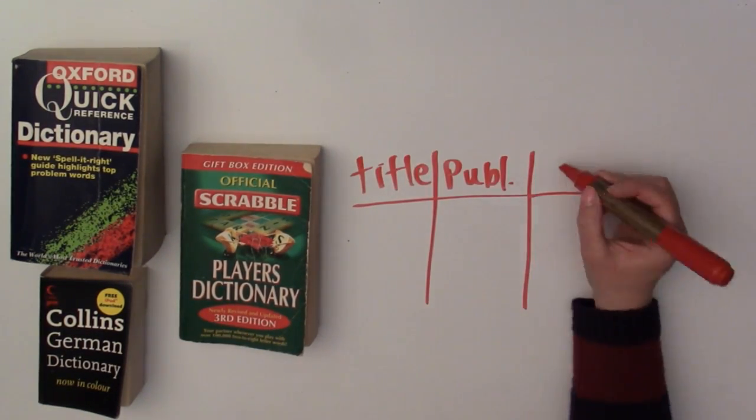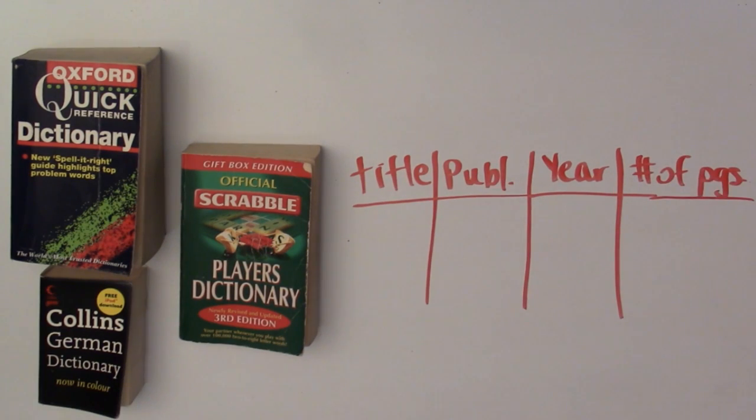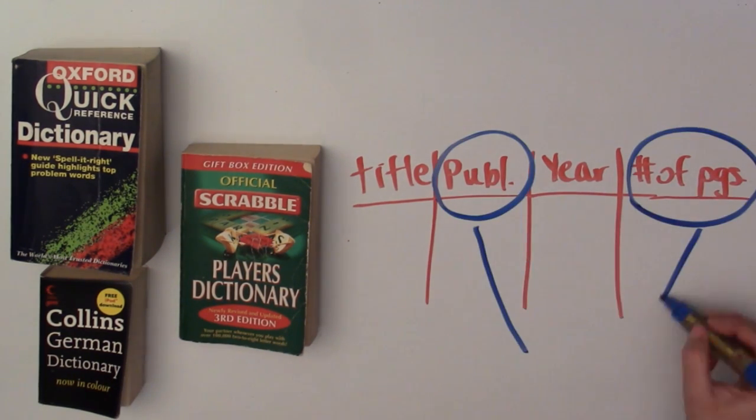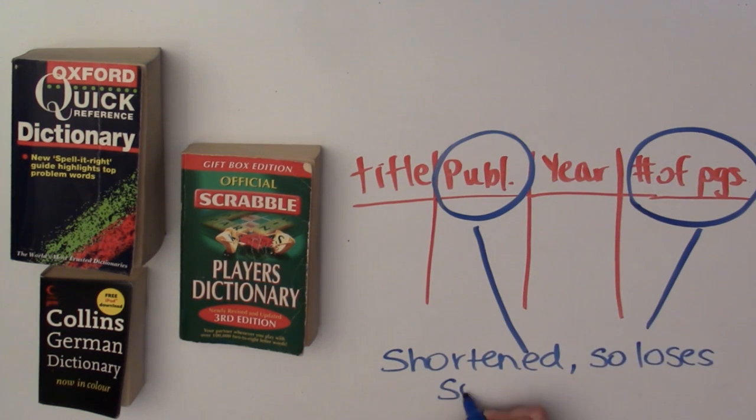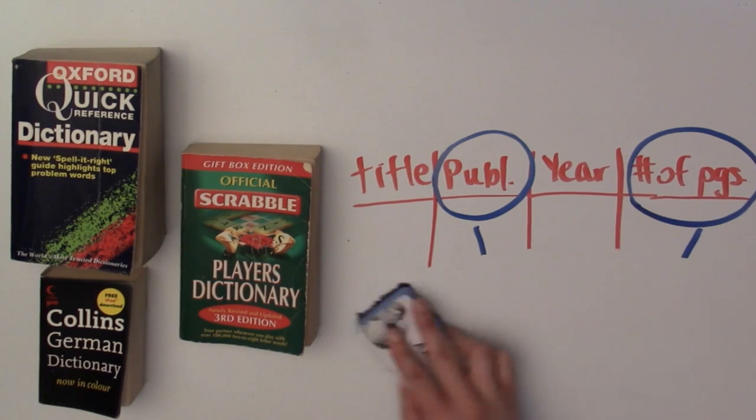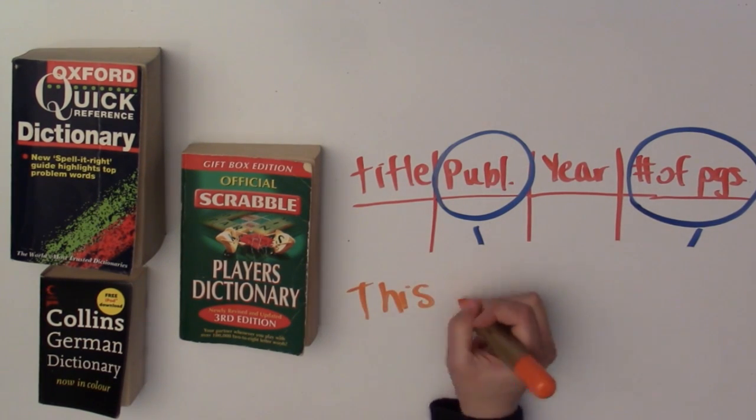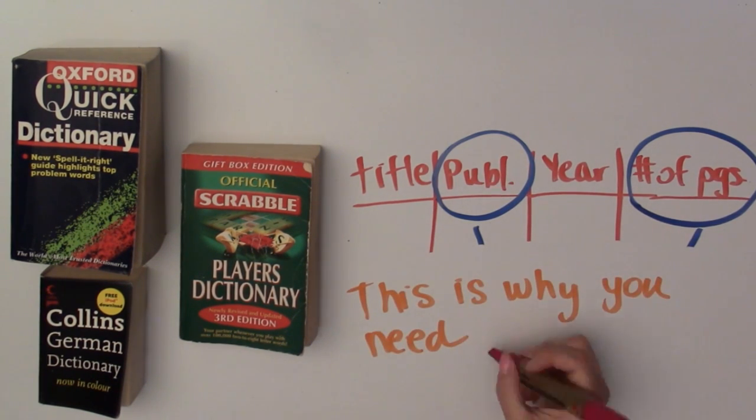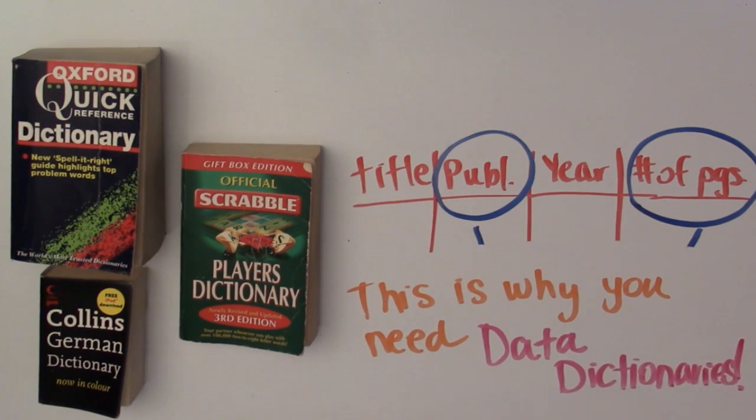But if you were to collect more information about these books, there isn't as much space anymore, so you would have to abbreviate some things. And this makes it harder to understand what the columns mean now. Because of this, we now have to record down somewhere what these columns mean. And this is what a data dictionary is.